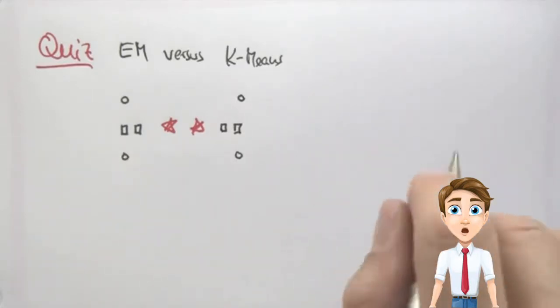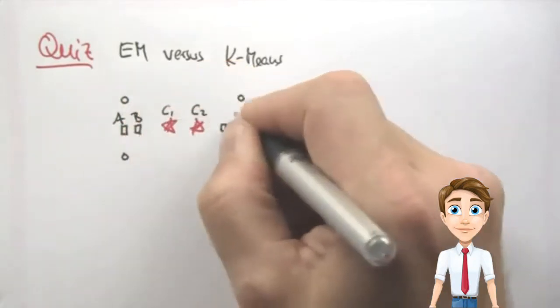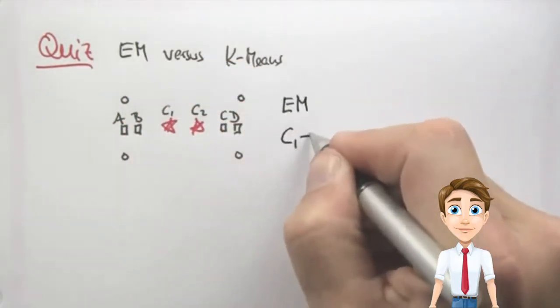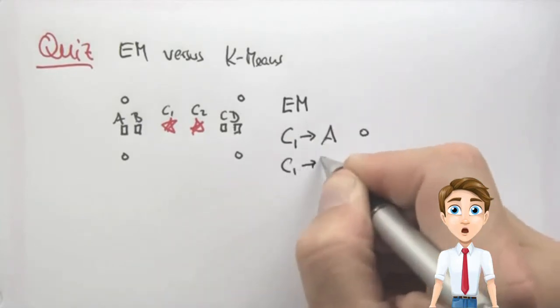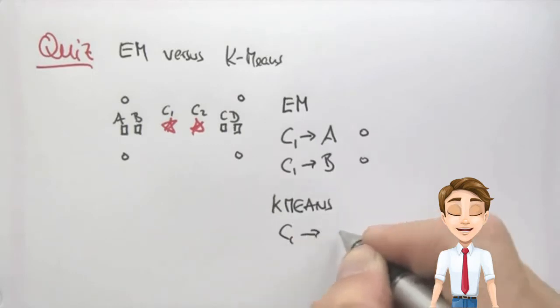But for now I'm going to give you four choices. Let me call this cluster 1, cluster 2, A, B, C, and D. In EM, will C1 move towards A, or will C1 move towards B? And in contrast in K-means, will C1 move towards A, or will C1 move towards B?